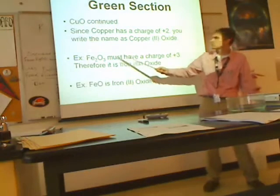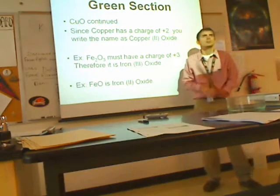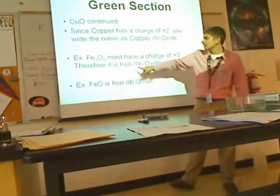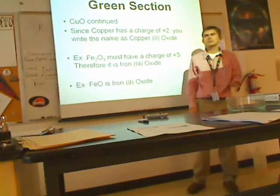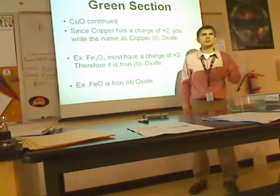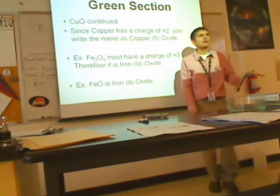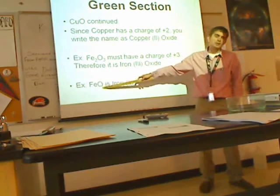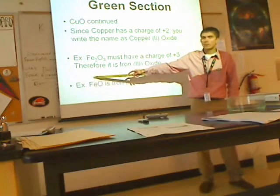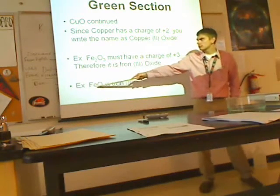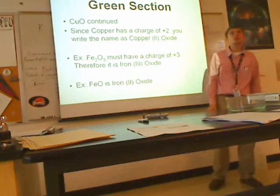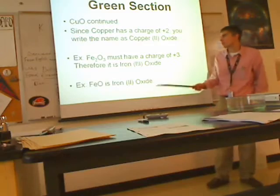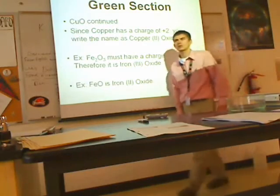So that means Fe₂O₃ would be called iron(III) oxide. Because iron has a charge of plus 3 — this 3 has nothing to do with the number of atoms of iron or oxygen; it's simply the charge of iron. For FeO, oxygen is again negative 2, iron is again positive 2, so this is going to be iron(II) oxide. So the name changes depending on the charge, and you have to know its charge — it's kind of a pain.